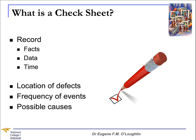Essentially, a Checksheet translates opinions of what is happening into what is actually happening. So instead of saying 'I think the problem is,' you can state 'the data says that the problem is.' A Checksheet gives you evidence for this.